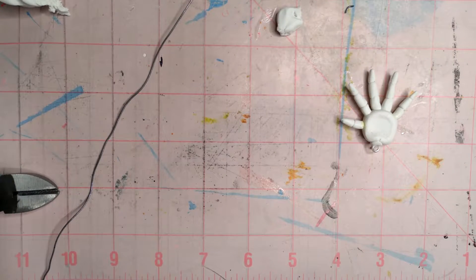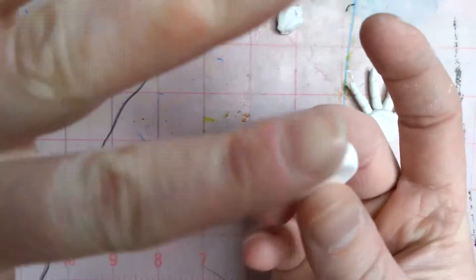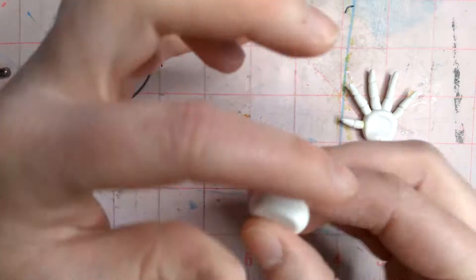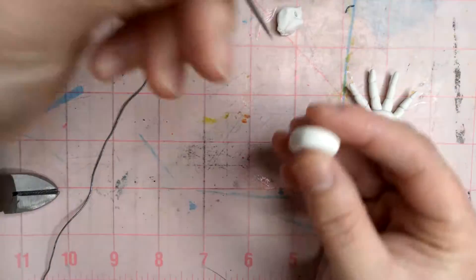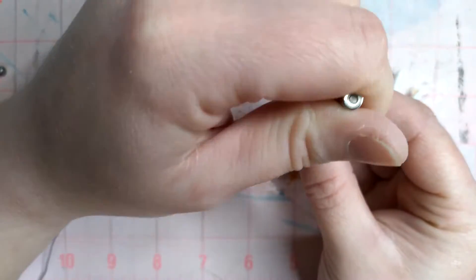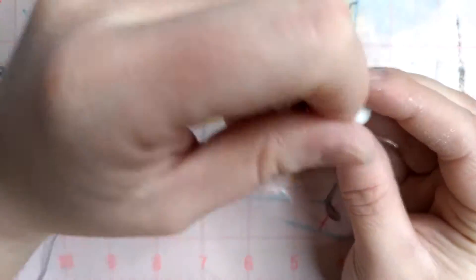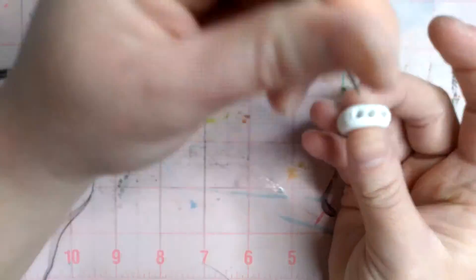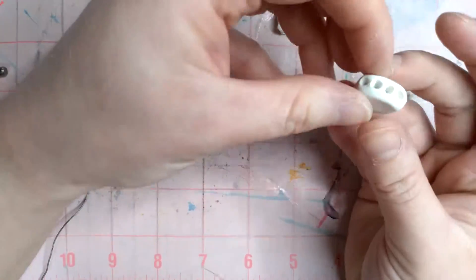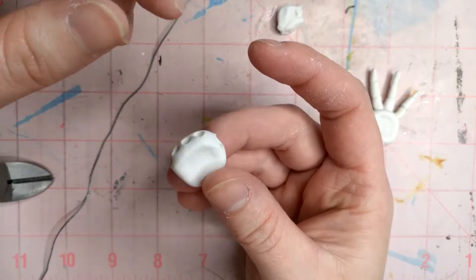So we are actually making Sundrop and Moondrop's hands in this video. We took a little break, but we are back. We're making Sundrop and Moondrop. This is part two, which may have been the limbs, but instead we are going for the hands first and then the limbs.